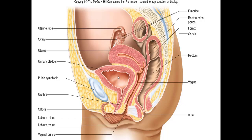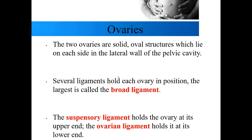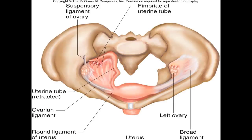The ovaries are two oval-shaped solid structures on the lateral wall of the pelvic cavity, held in place by a series of ligaments. The broad ligament spans all the way across from one ovary to the next. The suspensory ligament holds the ovary from the upper end — think of it as suspending the ovary like a chandelier — and the ovarian ligament holds it from the lower end.